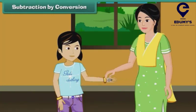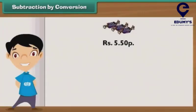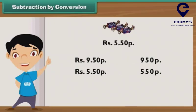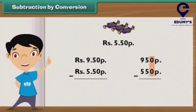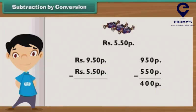Subtraction by conversion. Raveena gets 9 rupees 50 paisae from her mother as pocket money. She spends 5 rupees 50 paisae on toffees. What is the pocket money left with her? 9 rupees 50 paisae means 950 paisae and 5 rupees 50 paisae means 550 paisae. Write 550 paisae under 950 paisae and subtract them. 0 minus 0 is 0, 5 minus 5 is 0, and 9 minus 5 is 4. So, the amount left with Raveena is 400 paisae, that is 4 rupees.